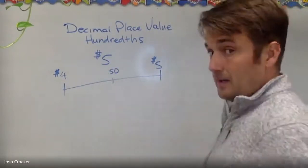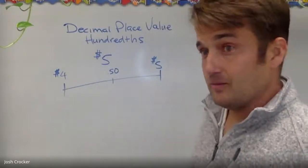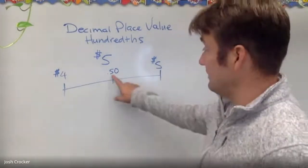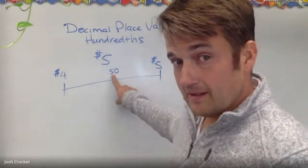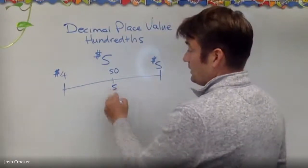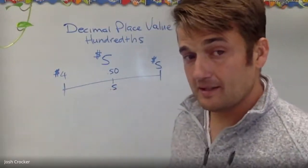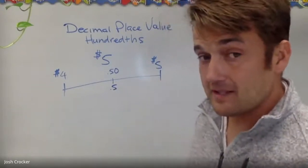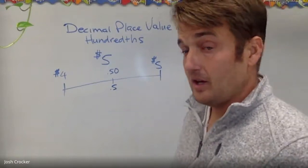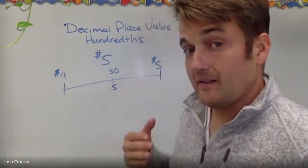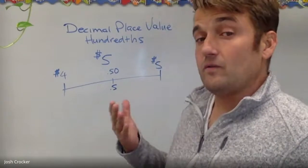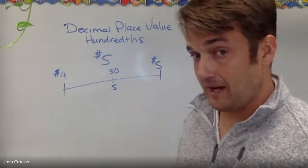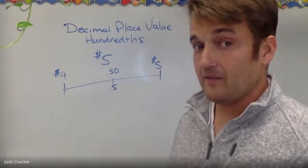Usually in money we do go to hundredths because we have a system based on a hundred pennies to a dollar. So this point in the middle I called five tenths and also 50 hundredths — because it can be five dimes, five out of ten dimes (five tenths), or it can be 50 hundredths — 50 out of a hundred pennies. Those are equal amounts of money. Five dimes, same as 50 pennies.